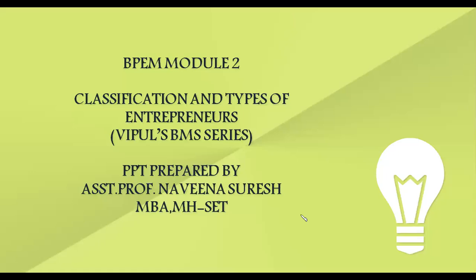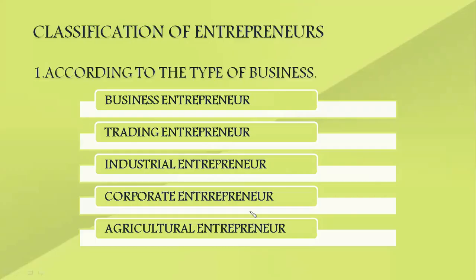In this lecture, we will be continuing with the classification of entrepreneurs on different bases. We had seen four to five types of entrepreneurs based on various criteria in the earlier lecture, so let us do a recap. The first classification is according to the type of business.